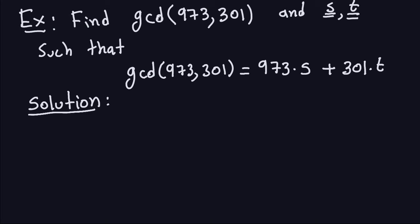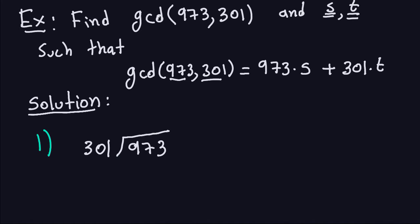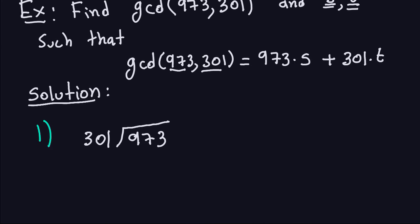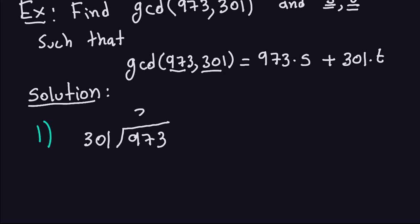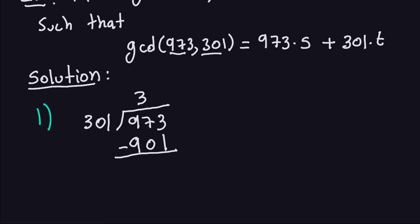My first step is to divide the largest number, which is 973, by 301. The number of times that 301 goes into 973 is 3 — that's my quotient. I multiply 3 times 301, which gives me 903, and I subtract that from 973. So that gives me a remainder of 70.